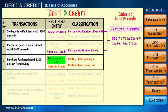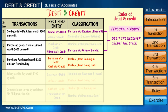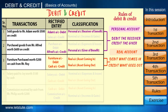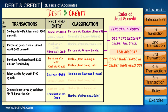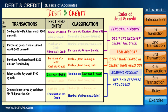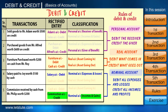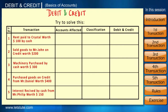In the third example we debited the asset coming into the business and credited the asset going out. So when any transaction includes assets, the rule of real account is: debit what comes in, credit what goes out. In the fourth and fifth examples we debited the expenses and credited the incomes. So when any transaction is of expenses, incomes, losses, and gains, the rule of nominal account is: debit all expenses and losses, credit all incomes and gains. So here is a small exercise for you all.